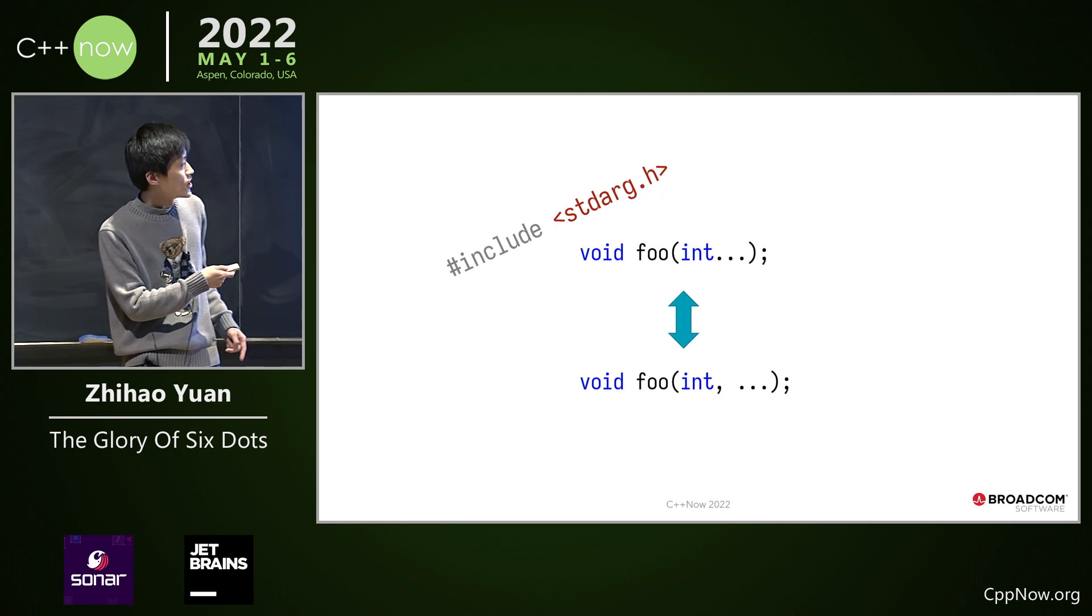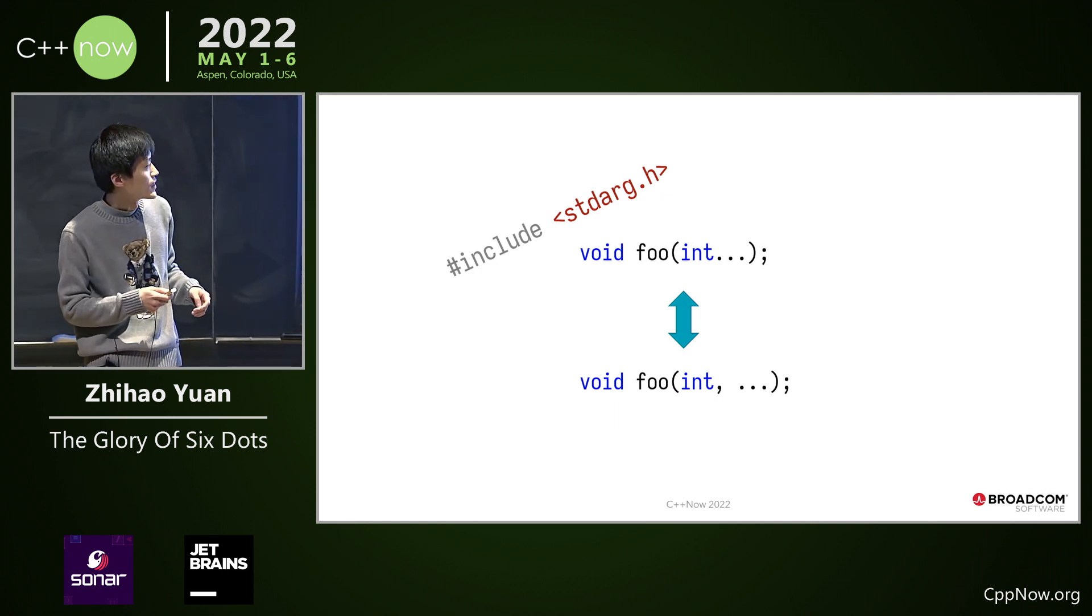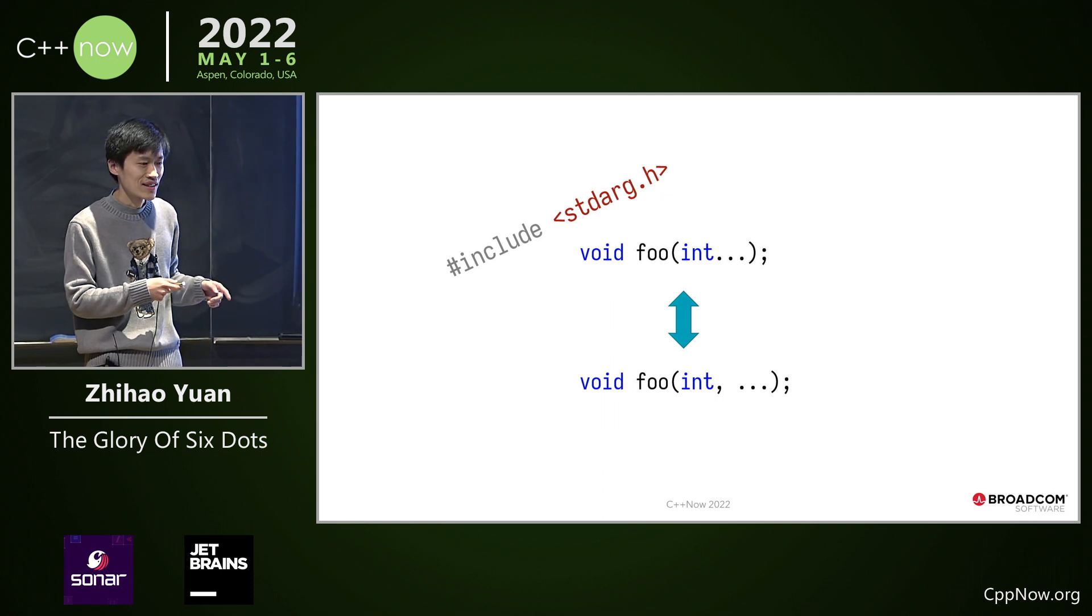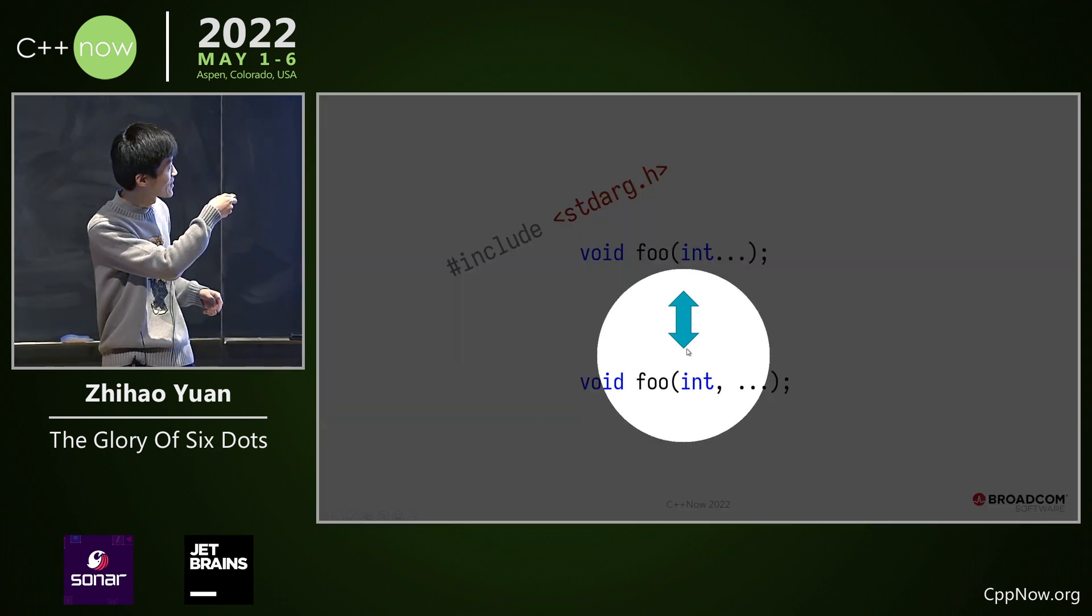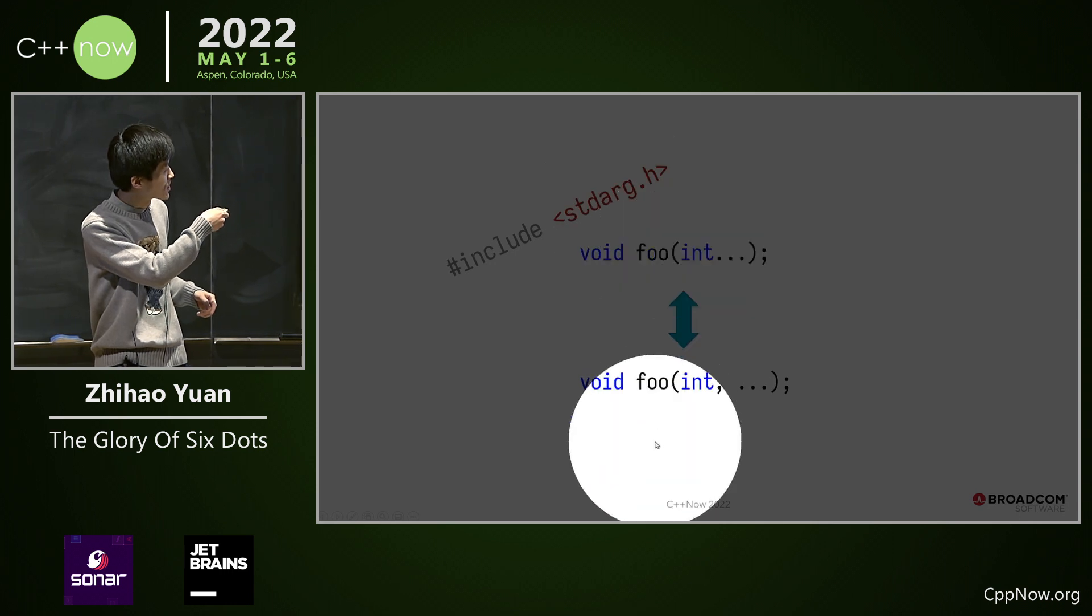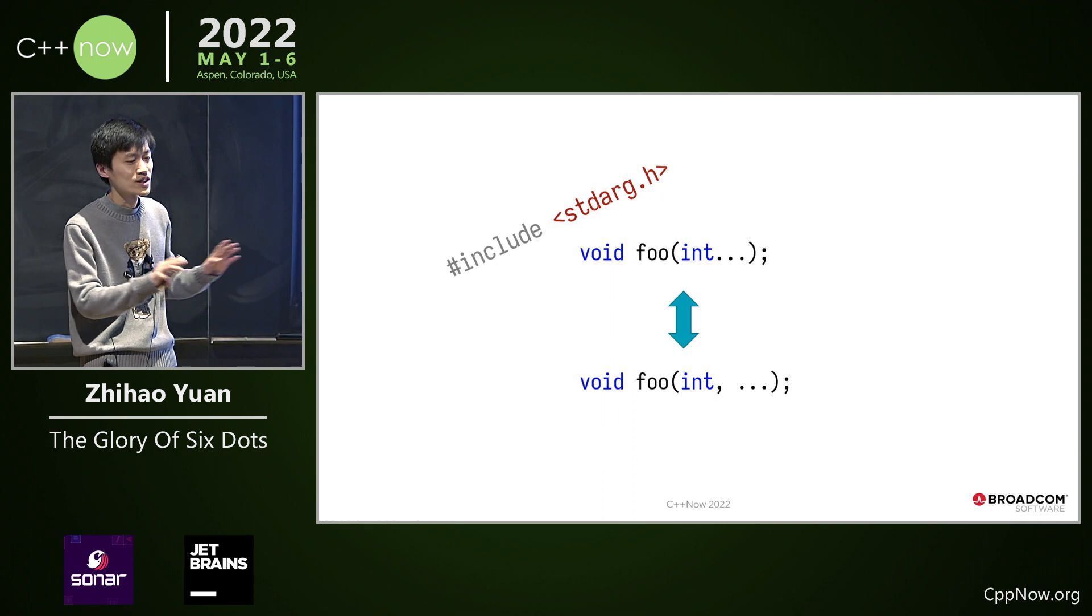There's some history behind this. Before C standardized the vararg, C++ first standardized using the first syntax. After C adopted this syntax, C++ goes, we'll accept both.